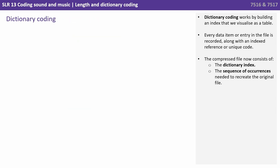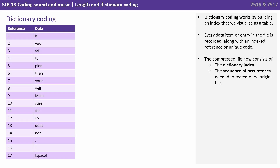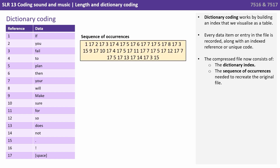Dictionary coding works by building an index that we visualise as a table. Every data item or entry in the file is recorded, along with an indexed reference or unique code. The compressed file now consists of the dictionary index, the table, and the sequence of occurrences needed to recreate the original file.